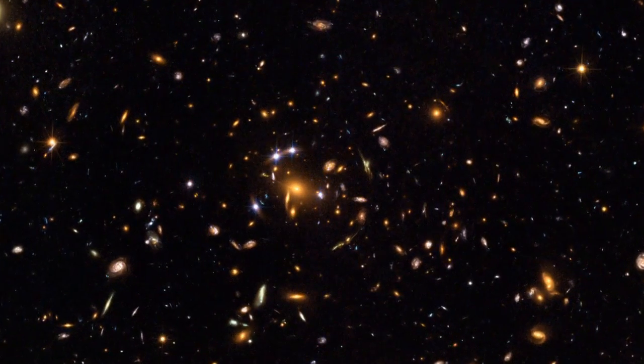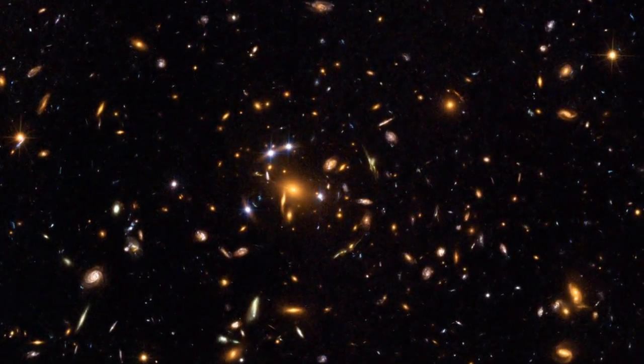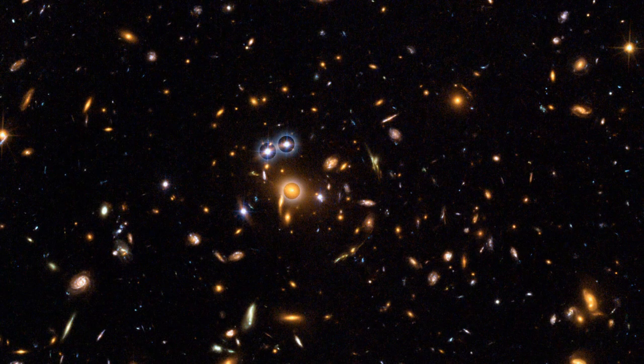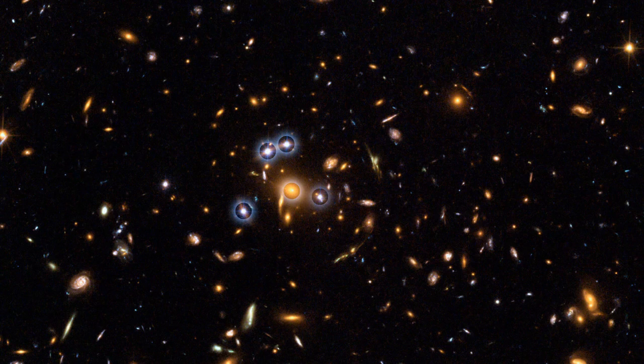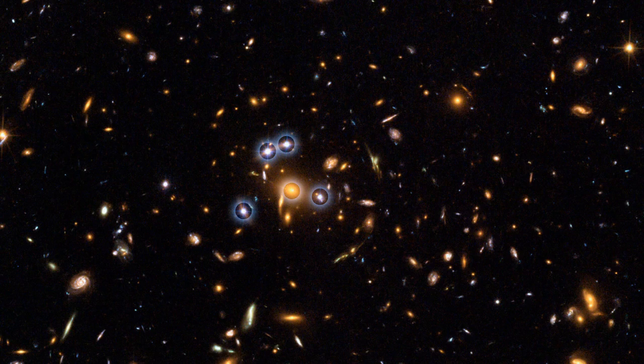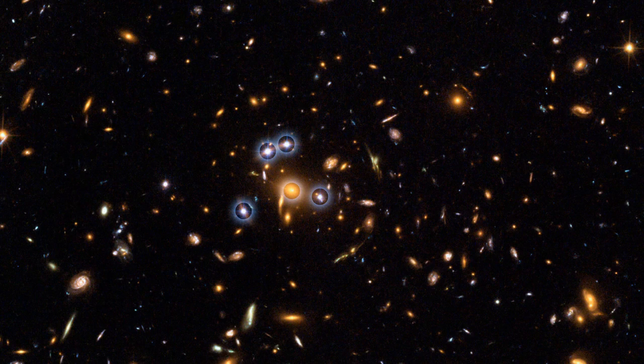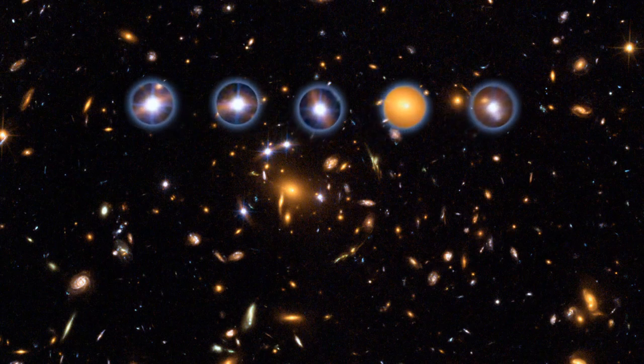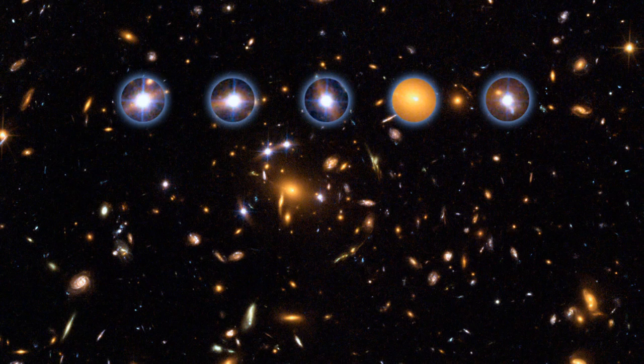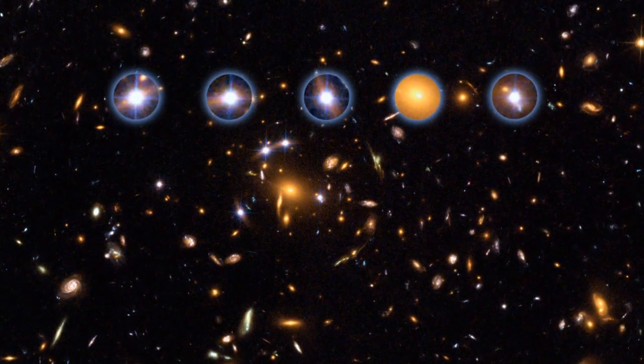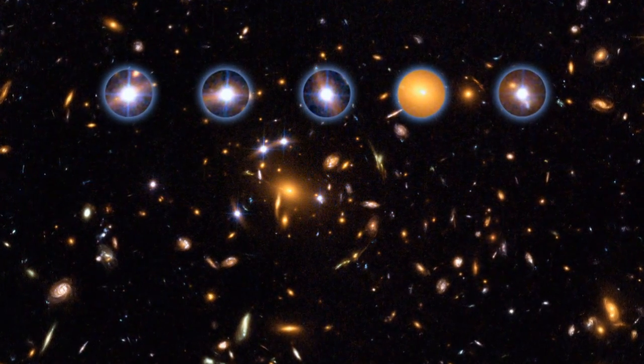This isn't the only intriguing effect that gravitational lensing can produce. Take these five quasars photographed by Hubble back in 2006. They all look very similar and close together, perhaps a little too similar. In fact, these are not quasar quintuplets but a single quasar seen five separate times as its light is lensed by a huge cluster of galaxies lying in the foreground.